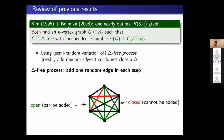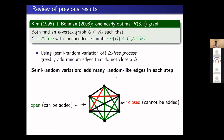Much earlier, Kim used a semi-random variation of the triangle-free process. Here, semi-random means that at each step, instead of adding just one random edge, we add many random edges at each step. That is the key difference between Kim's and Bohman's approaches.